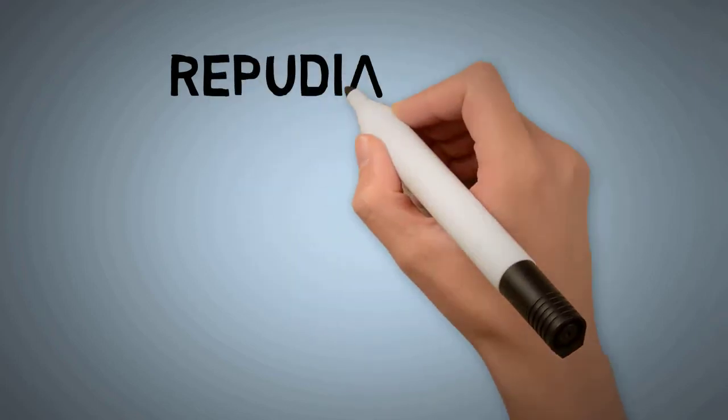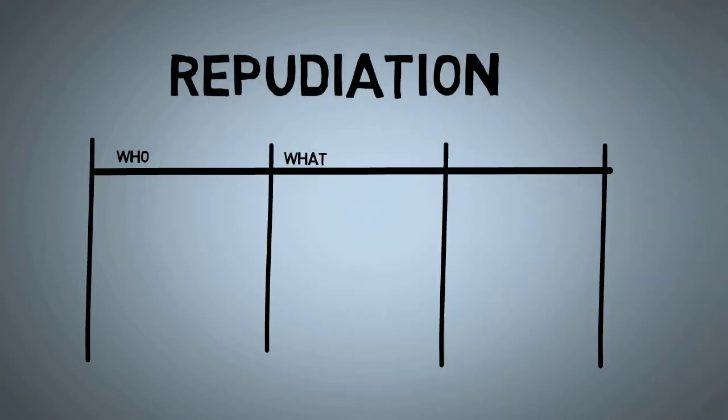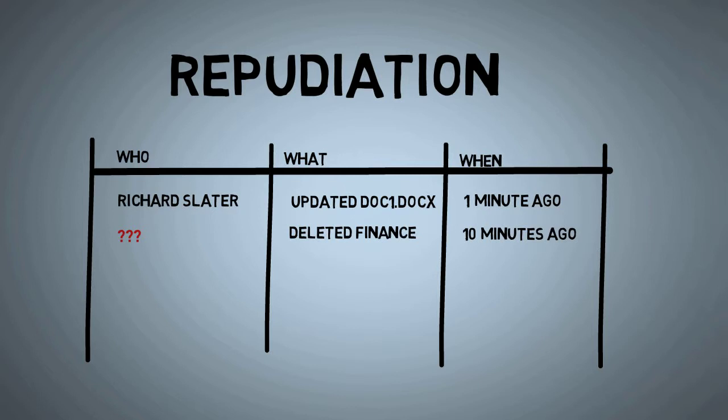Repudiation is performing an unauthorized action upon a system and being able to deny the attacker perpetrated this act. This, unsurprisingly, violates the non-repudiation quality attribute.